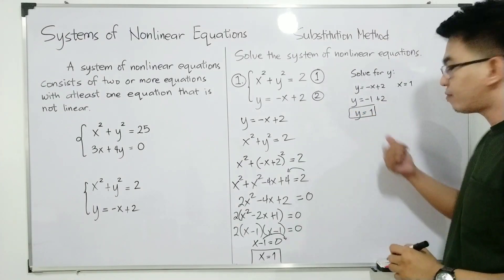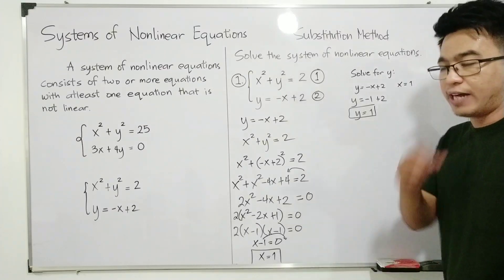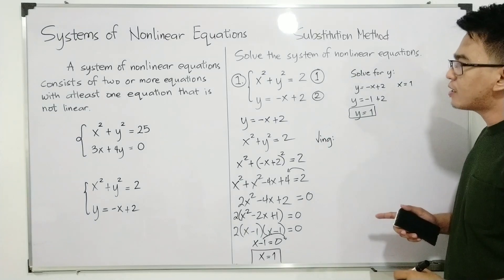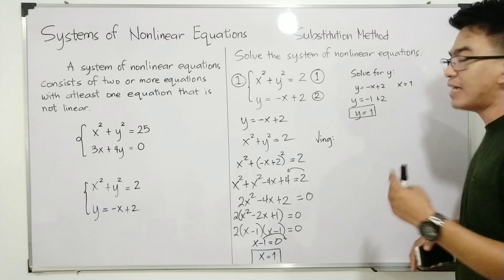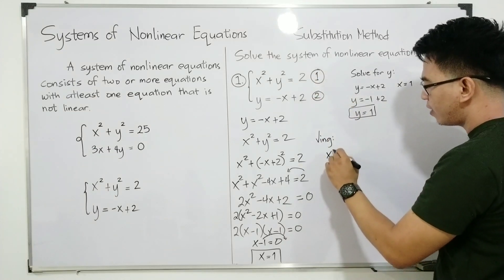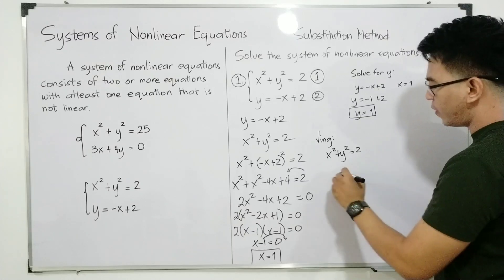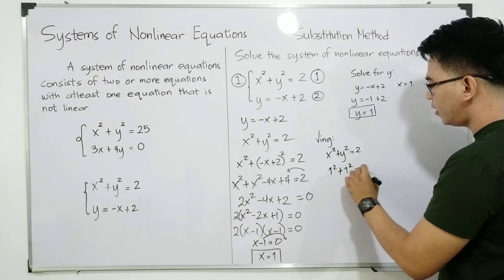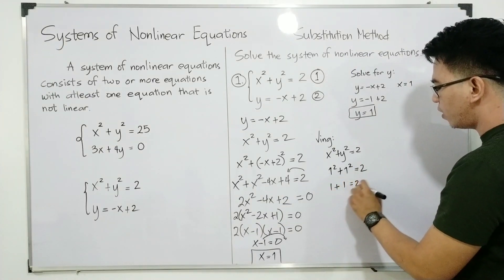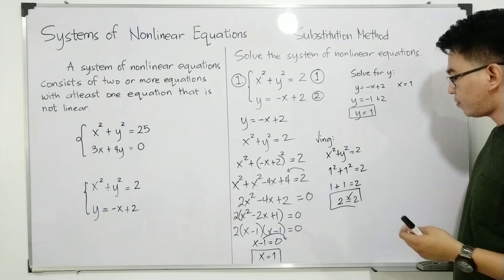So we have the value of y is equal to 1. Now, for us to verify whether our answer is correct, we need to do the checking. For the checking, we need to substitute the value of x and y in each equation to satisfy the system. Let's check the first equation: x squared plus y squared is equal to 2. With x equal to 1 and y equal to 1, that is 1 squared plus 1 squared is equal to 2. Since 1 plus 1 equals 2, we have 2 is equal to 2. We are done with the first equation.